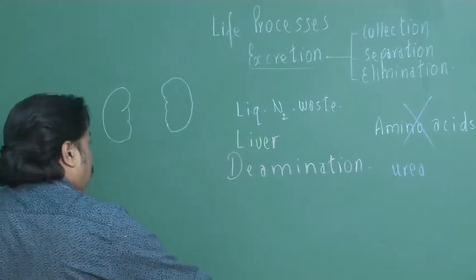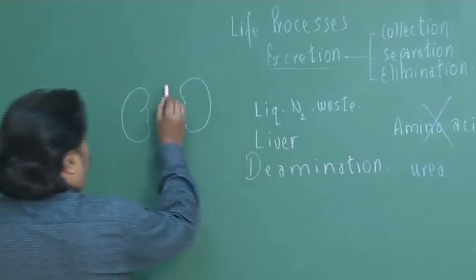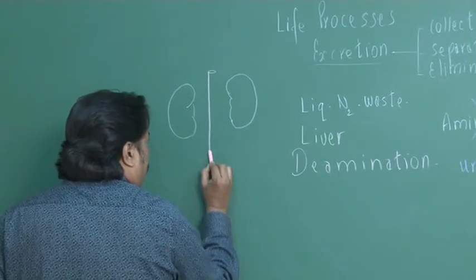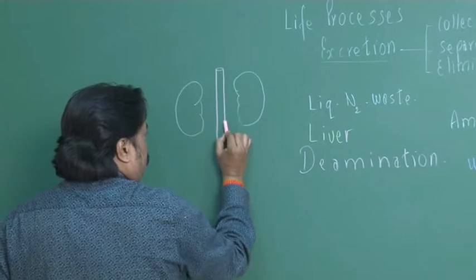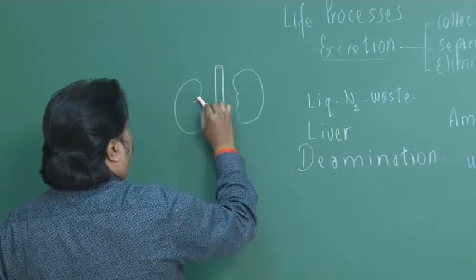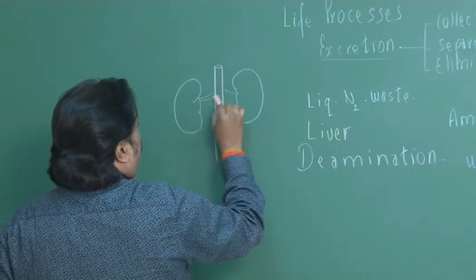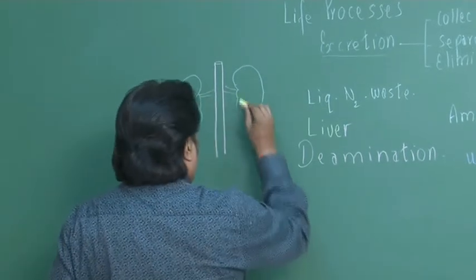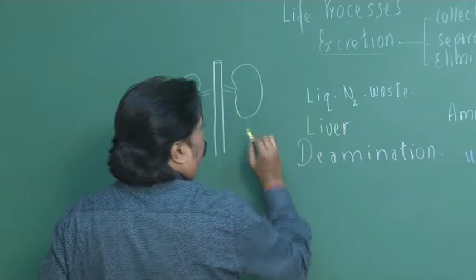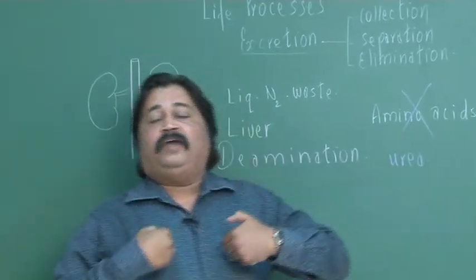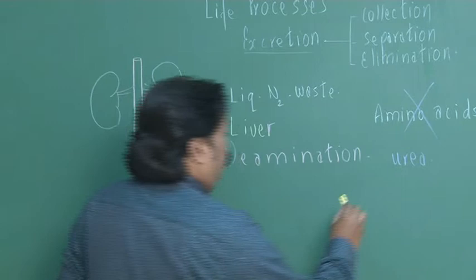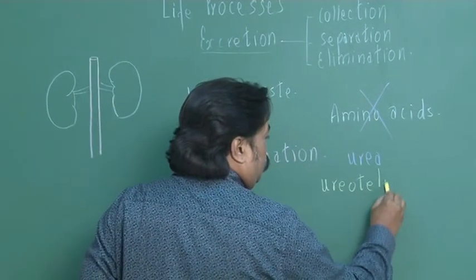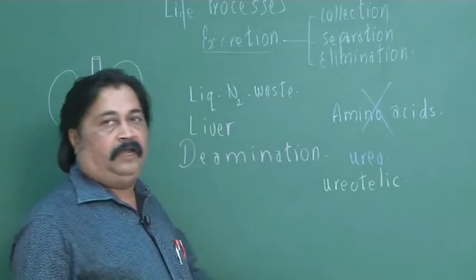Now, the blood vessel which is passing through the liver carries blood which is oxygenated, and at the same time that blood is containing liquid nitrogenous waste. The main kind is urea. The type of animal we are, we are ureotelic. Why? Because urea is the main liquid nitrogenous waste.